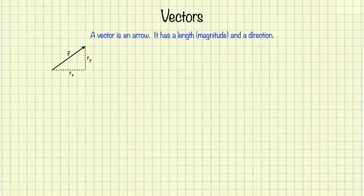This is in two dimensions. If we were working in three dimensions, there would be a third component pointing in and out of the page, which I might call the z component. But I'm going to stick to two dimensions because it's simpler, and the rules for the third dimension are exactly the same as the rules for the other two. This arrow, or vector, also points in some direction, which I'm going to call theta.